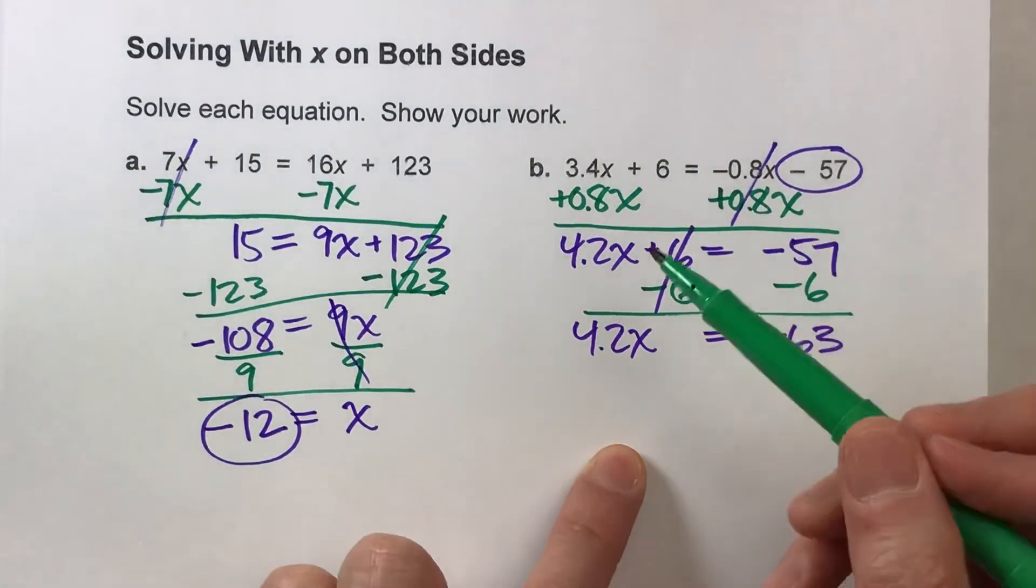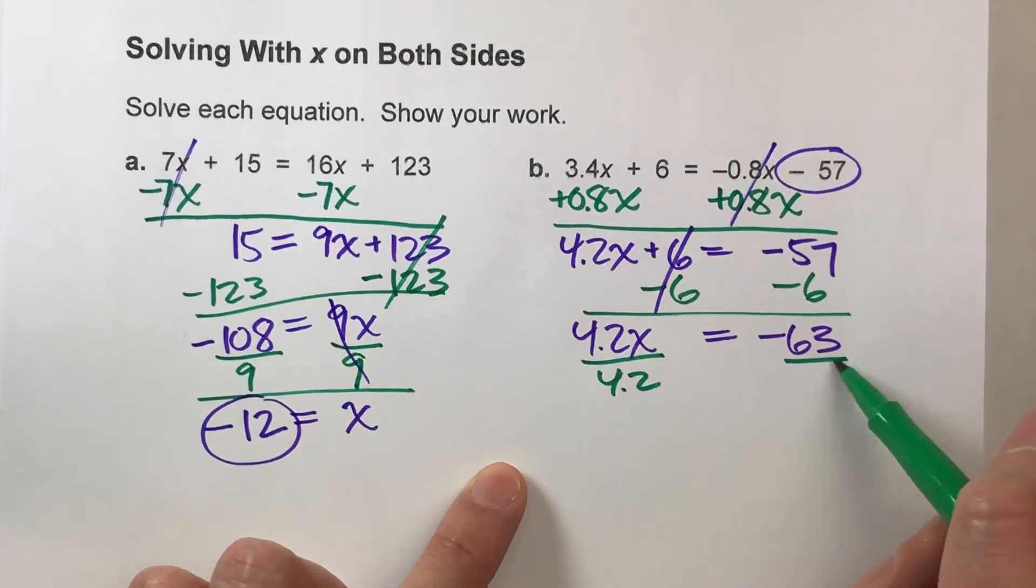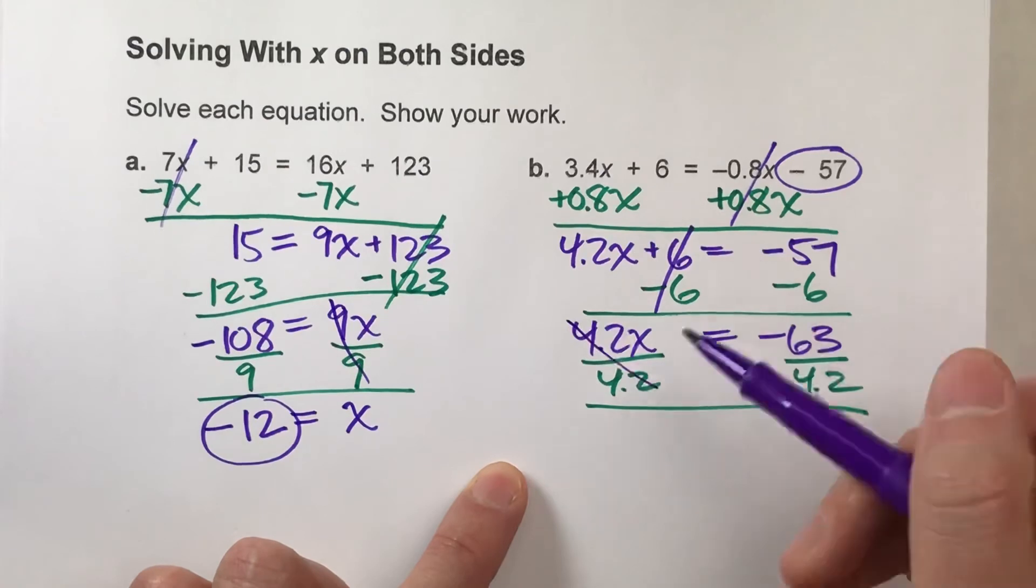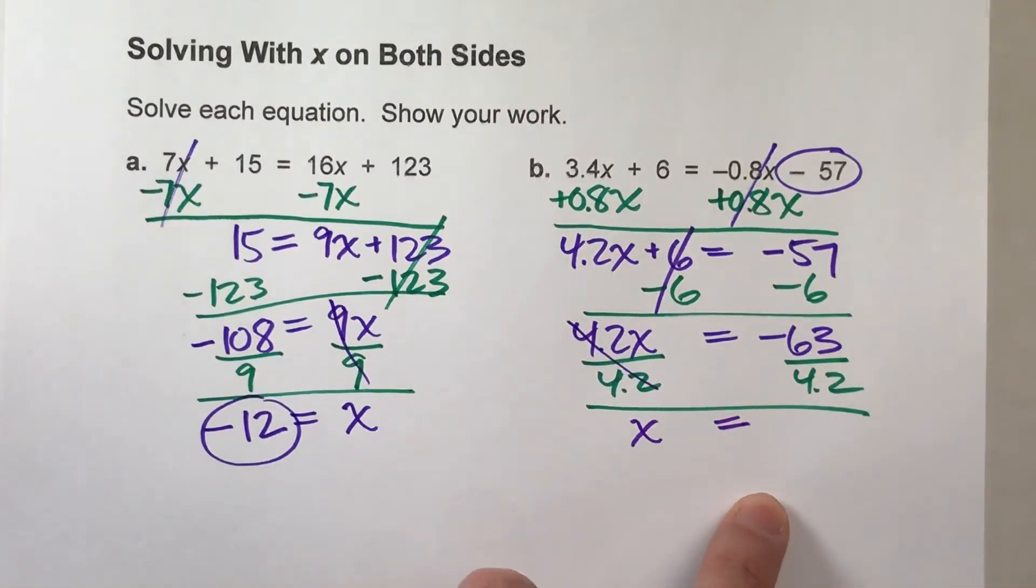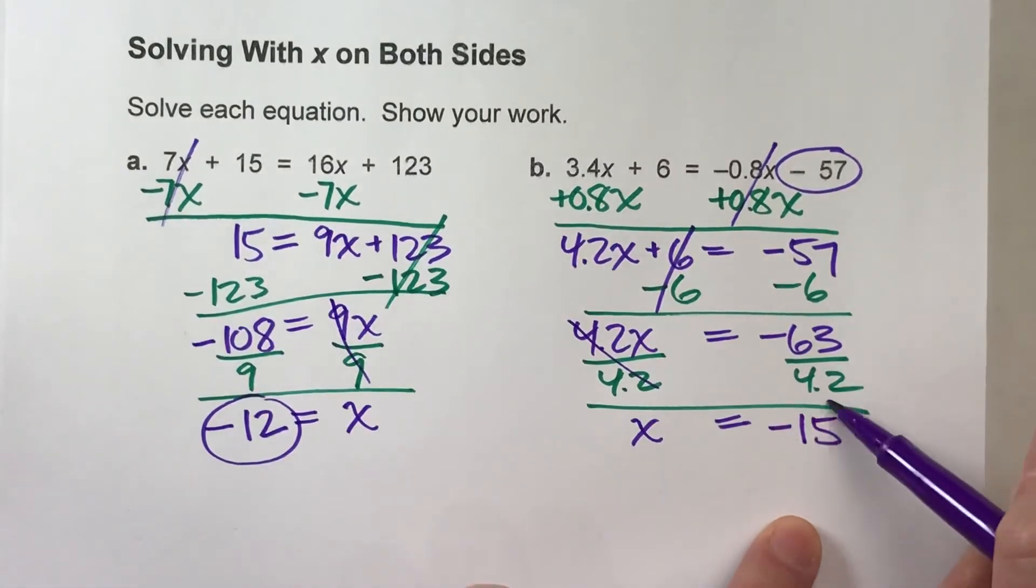We're almost there. To get x by itself, I'm going to divide both sides by 4.2. When I do that, the 4.2's undo each other, but the x drops down, the equals drops down, and negative 63 divided by 4.2 gets me negative 15, and that's my answer.